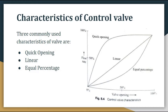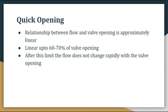There are three commonly used characteristics of control valve which are: quick opening, linear, and equal percentage. This is the graph you can see, which we will be referring to while explaining these three characteristics of control valve. First we will discuss quick opening characteristic. In quick opening, the relationship between the flow and the valve opening is approximately linear up to 60 to 70 percent of the valve opening.